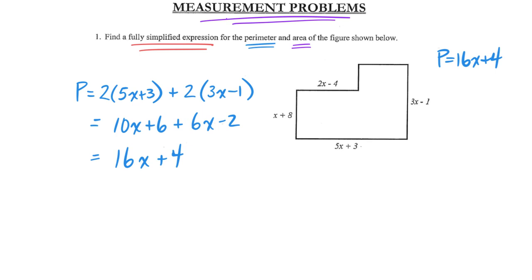That's the first half of the first problem — we found the perimeter. Now I want us to find the area. We have another moment to try this on our own. Take a moment and try to find the area of that shape on your own. Pause the video now.